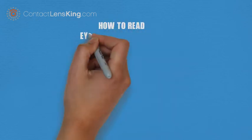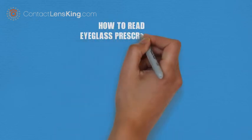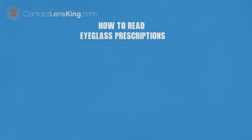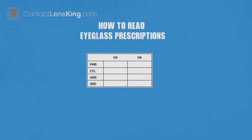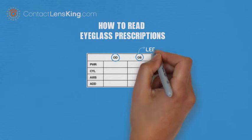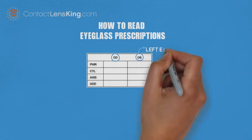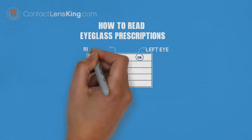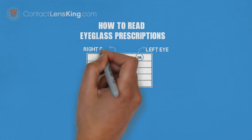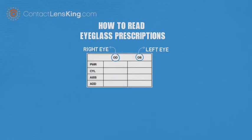How to read eyeglass prescriptions. Eyeglass prescriptions usually contain parameters under the O.D. and O.S. headings. O.D. and O.S. are Latin abbreviations for oculus dexter or right eye and oculus sinister or left eye.